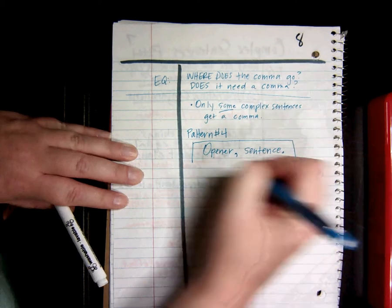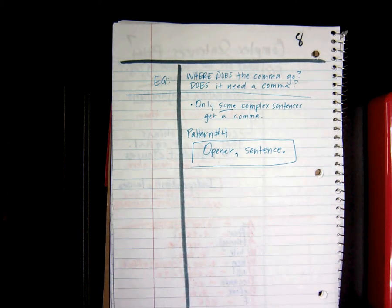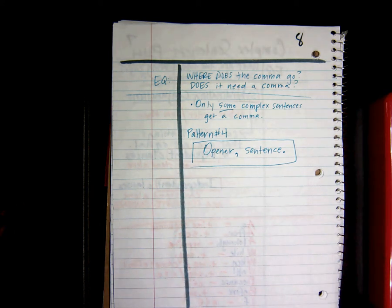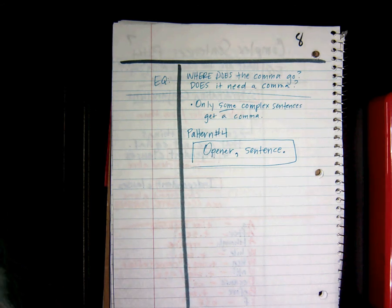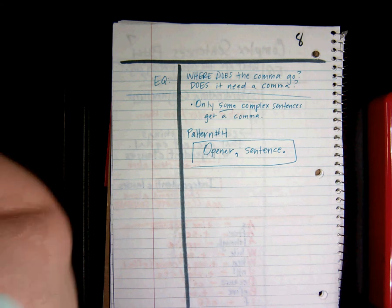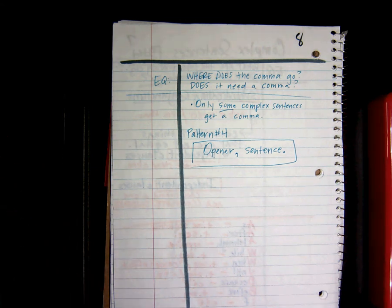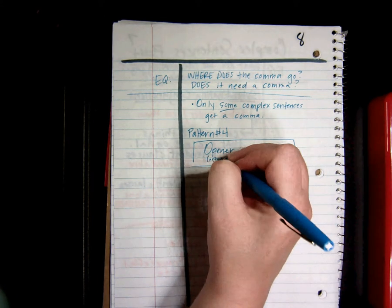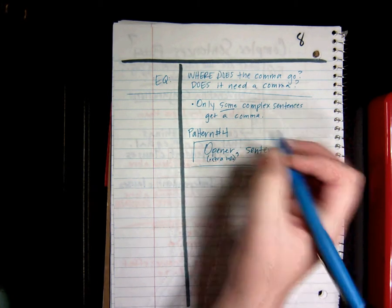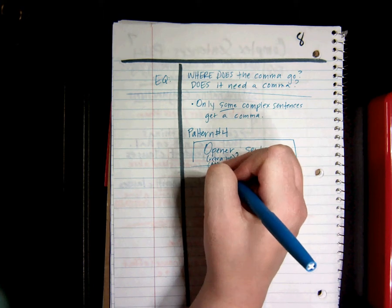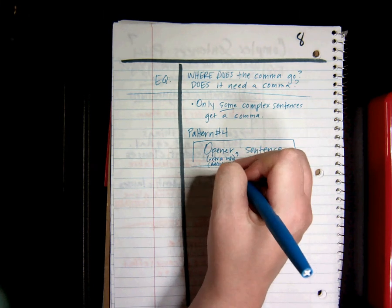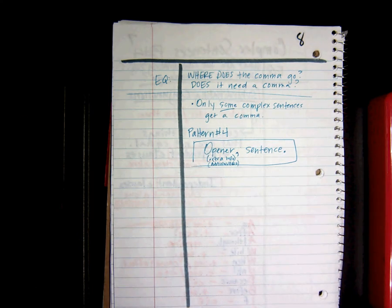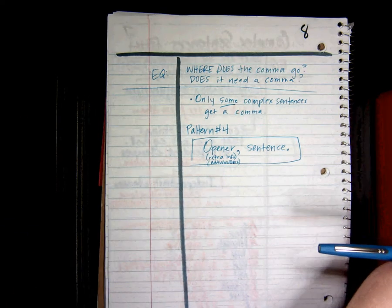I want you to draw that in your notes. Only some complex sentences get a comma, and the pattern that gets a comma every time is: opener, comma, sentence. And this opener is extra info. And it starts with an allubus. Extra info starts with an allubus.